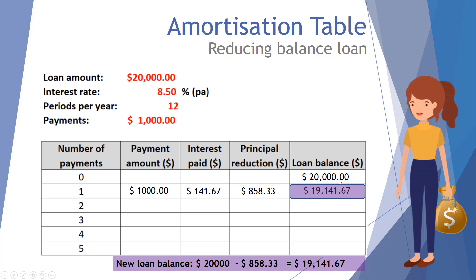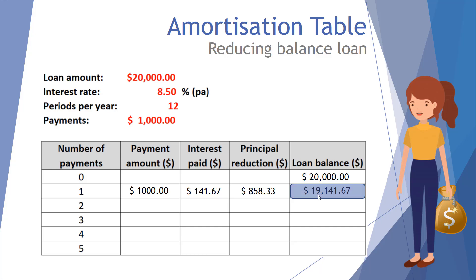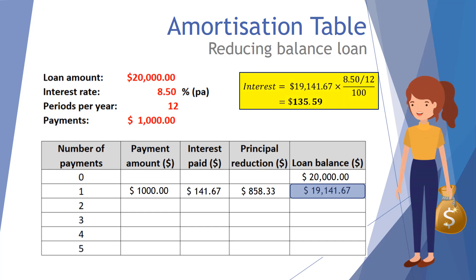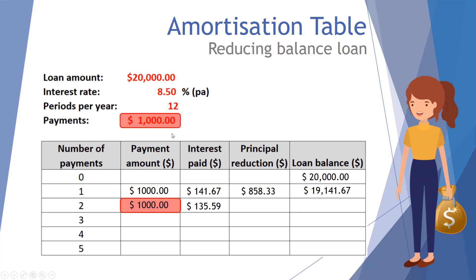The principal reduction is one thousand minus one hundred and forty one point six seven, giving eight hundred and fifty eight dollars and thirty three cents. That reduces the loan balance from twenty thousand dollars to nineteen thousand one hundred and forty one dollars and sixty seven cents — simply the previous balance minus the principal reduction. To complete the rest of the table it's just a repetition of the same process. Step one: take the current balance, apply eight point five percent divided by twelve to work out the interest paid.